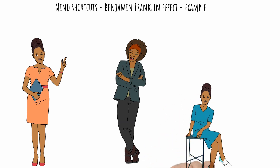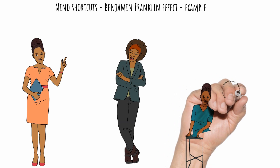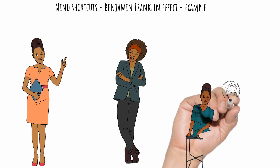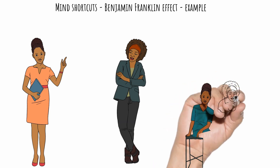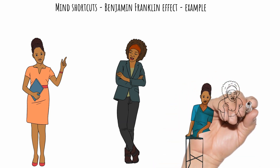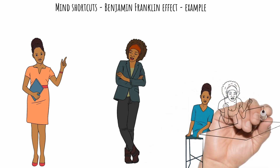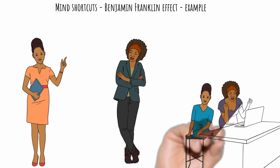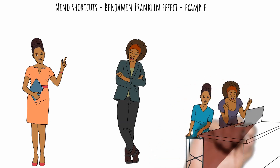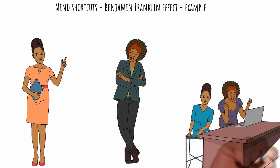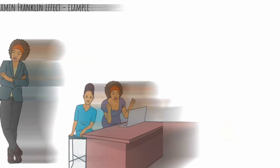Over time, these requests become reasonably repetitive, always involving small requests for help. As time passes, for unknown reasons, the relationship between Claire and her supervisor begins to improve more and more. What could be the cause of this improvement?